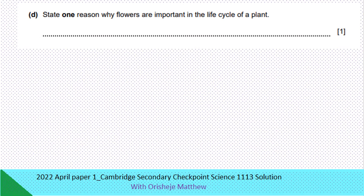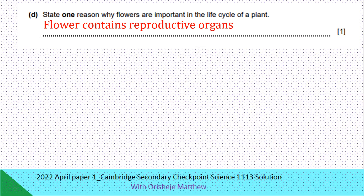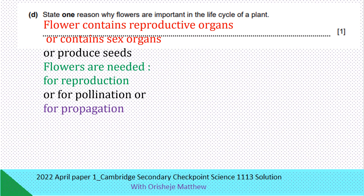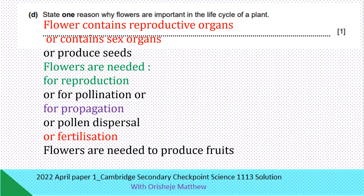State one reason why flowers are important in the life cycle of a plant. Flowers contain reproductive organs, or flowers contain sex organs. Flowers produce seeds. Flowers are needed for reproduction, for pollination, for propagation, or pollen dispersal. Flowers are needed for fertilization. Any of these answers will be correct for this question.